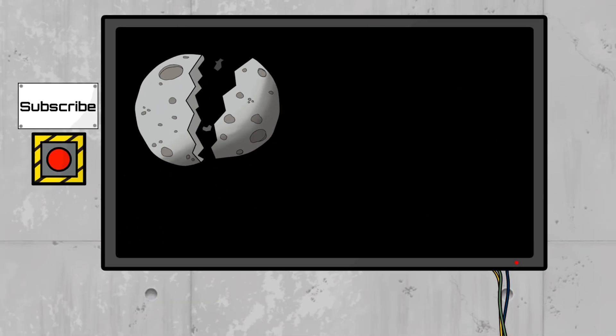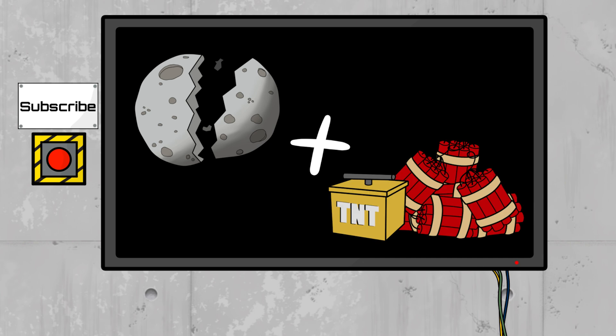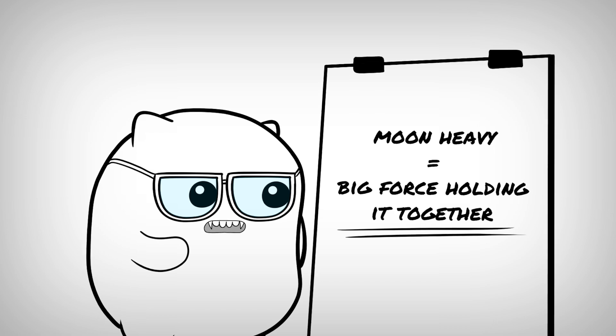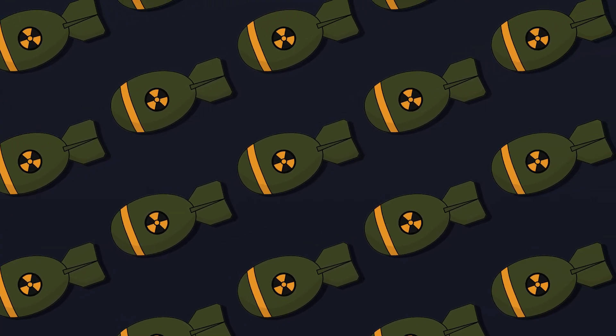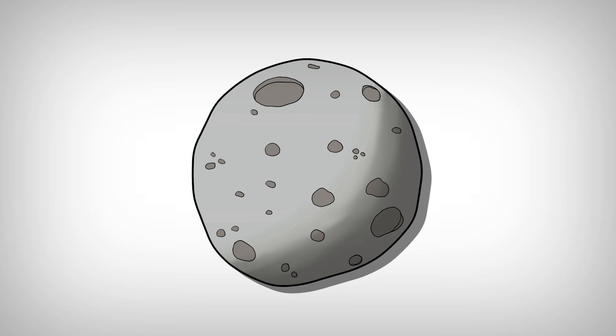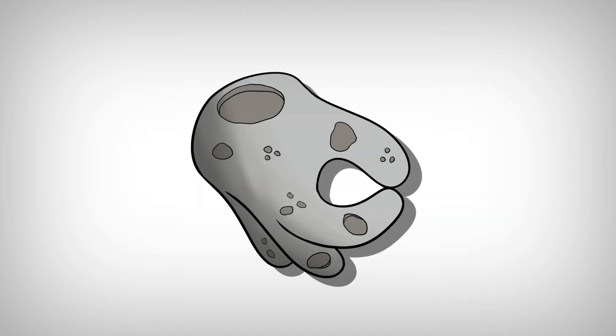You might think that the easiest thing to do would be to simply blow it up, but we actually can't. Because its binding energy, or in simpler terms, the force that's holding it together, is so big that even a billion nukes wouldn't be enough to blow it to pieces. Even if we could somehow split it apart, it would just reform into a sphere again.